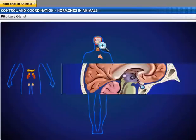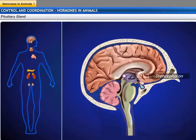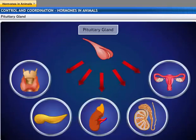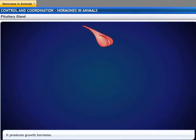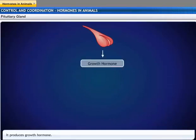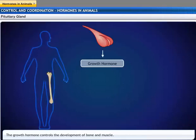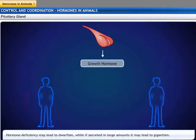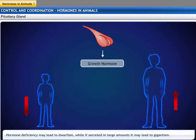The pituitary gland is a pea-shaped gland present at the base of the brain. It is connected to the ventral wall of the diencephalon. It secretes a large number of hormones that regulate organs as well as other glands, hence it is also known as the master gland. One of the hormones it secretes is the growth hormone, which controls the development of bones and muscles. Hyposecretion of this hormone in childhood leads to dwarfism, while hypersecretion can lead to gigantism.